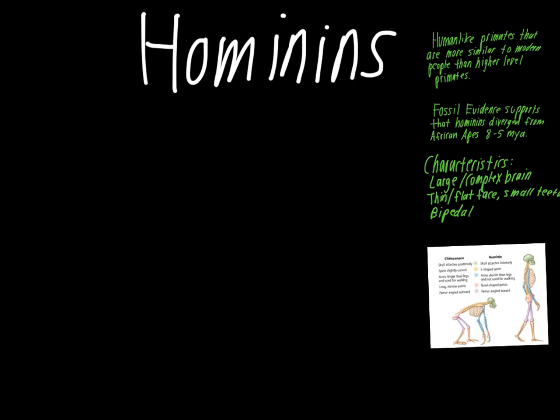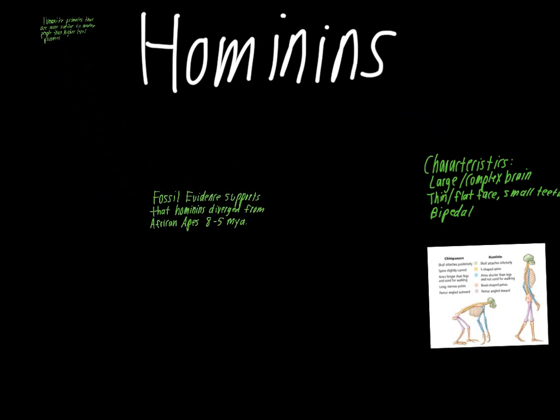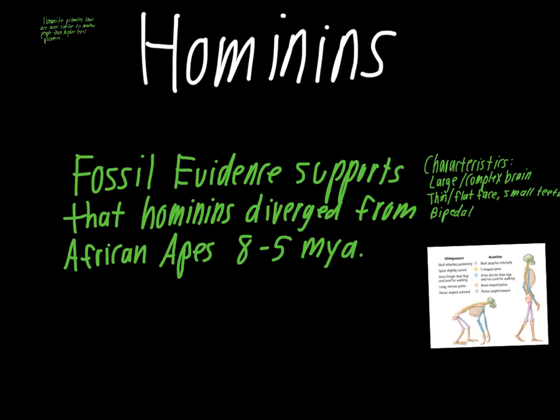The next thing to talk about are the hominids, because that's really the transition we're looking at — hominoids to hominids. Hominids are human-like primates that are more similar to modern people than other higher-level primates like chimpanzees. We'll look at fossil evidence and many different hominid groups, such as Homo floresiensis, Homo erectus, and Homo neanderthalensis, which are more similar to modern people than higher-level primates like chimpanzees. Most hominids diverged from African apes around 5 to 8 million years ago, and we'll look at the modern hominid species that came during this transition.